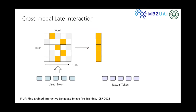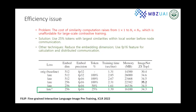We replace the original similarities in CLIP with this token-wise similarity and still use contrastive loss for pre-training. We feed images and text to both encoders to get token-wise representations, obtain a patch-word similarity matrix, and apply the max-mean strategy to get the similarity between the image and text. Finally, we pre-train with contrastive loss based on these similarities.